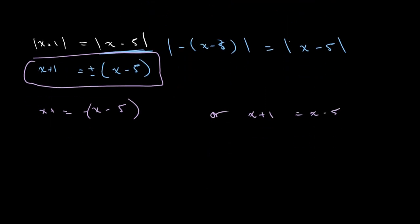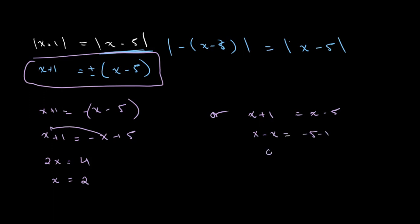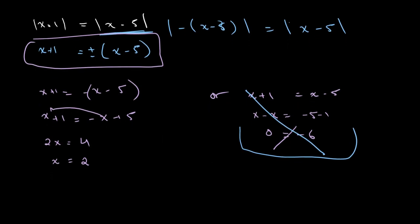We can solve both of these equations. For the first case, x plus 1 is equal to negative x plus 5. Bringing the x over, we get 2x is equal to 4, and x is equal to 2. For the second case, x minus x is equal to minus 5 minus 1, giving us 0 is equal to minus 6, which is impossible — so we simply ignore this. Therefore, our final answer is x is equal to 2.